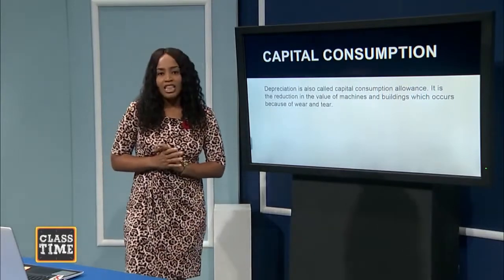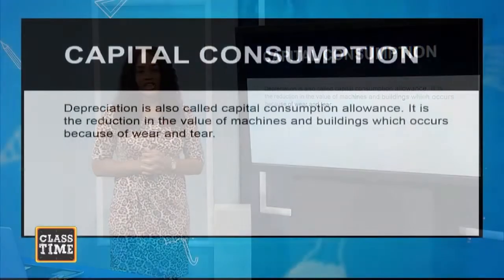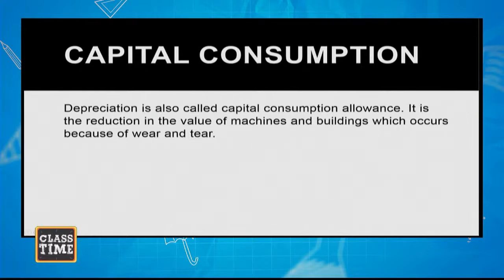One thing to mention is capital consumption allowance, otherwise known as depreciation. When countries use their capital factors of production daily or yearly, over time things get worn out. You have to make an adjustment in your GDP to account for the fact that you need to replenish these machines — either upgrade them, purchase new ones, or fix those that are worn out. That's why we have an allowance for capital consumption.